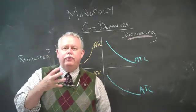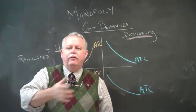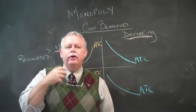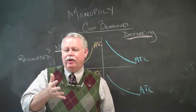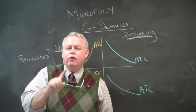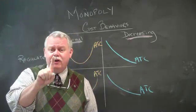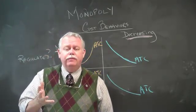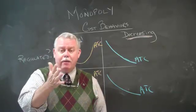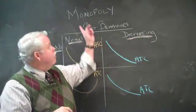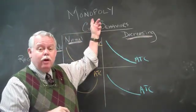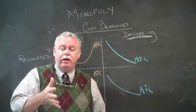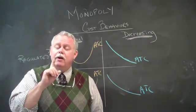This is an introduction to the concept and the graphs associated with monopoly, a form of market structure where you have one seller and no competition. Mono meaning one — monopoly means one seller.